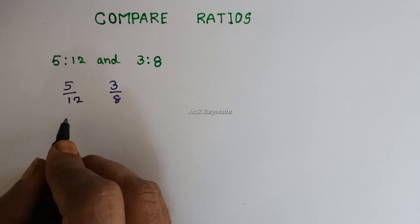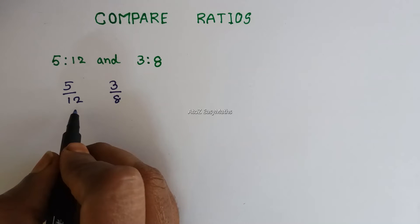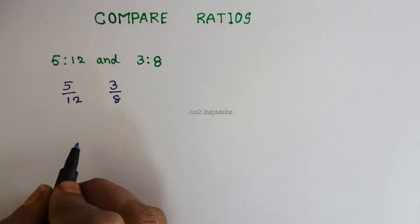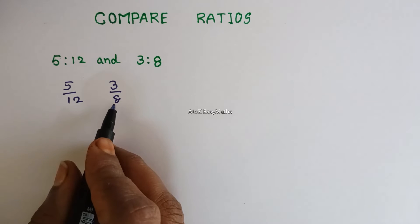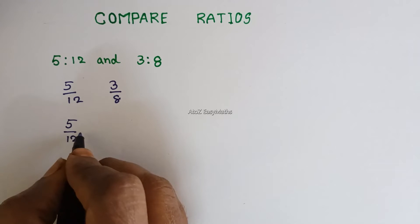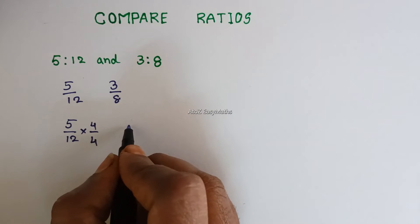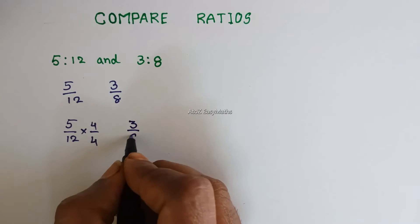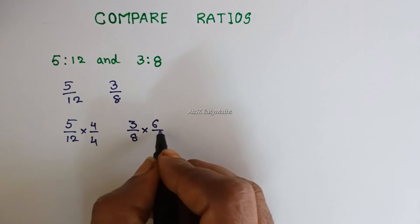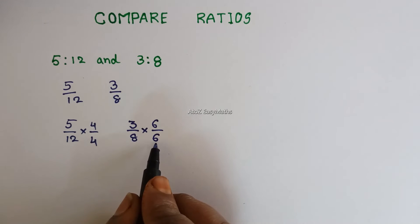Here 12 times 4 is 48, and the same way, 8 times 6 is 48. For that, 5 by 12 we are multiplying by 4 in numerator and denominator. The same way, 3 over 8 we are multiplying by 6 over 6. 12 times 4 is 48 and 8 times 6 is 48.